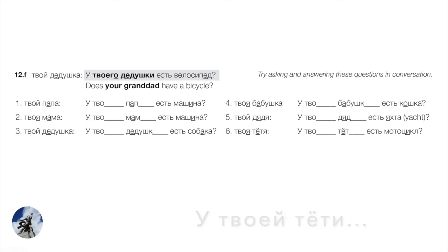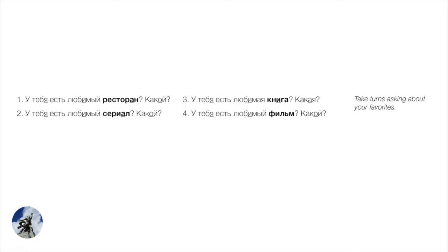A few more questions to practice answering about your favorite things: У тебя есть любимый ресторан? Какой? У тебя есть любимый сериал? Какой? — Do you have a favorite TV show? У тебя есть любимая книга? Какая? У тебя есть любимый фильм? Какой? — Do you have a favorite movie?